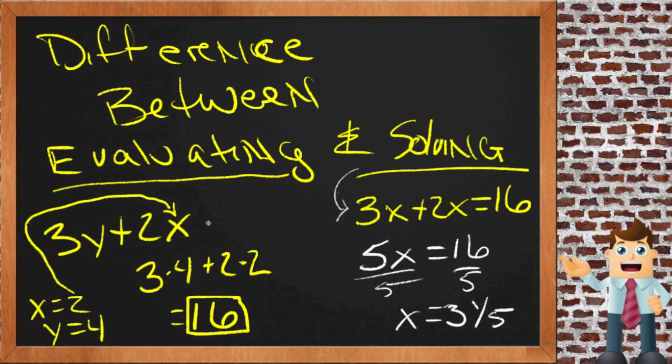So evaluating is something you do when you do not have an equal sign. And solving is something that you do when you do have an equal sign and you're trying to find a value for x. Commonly with evaluating, you'll be given a value for the variables, where for solving, you commonly will not. And that's what you're looking for: the value that that variable could be that would make this statement true.